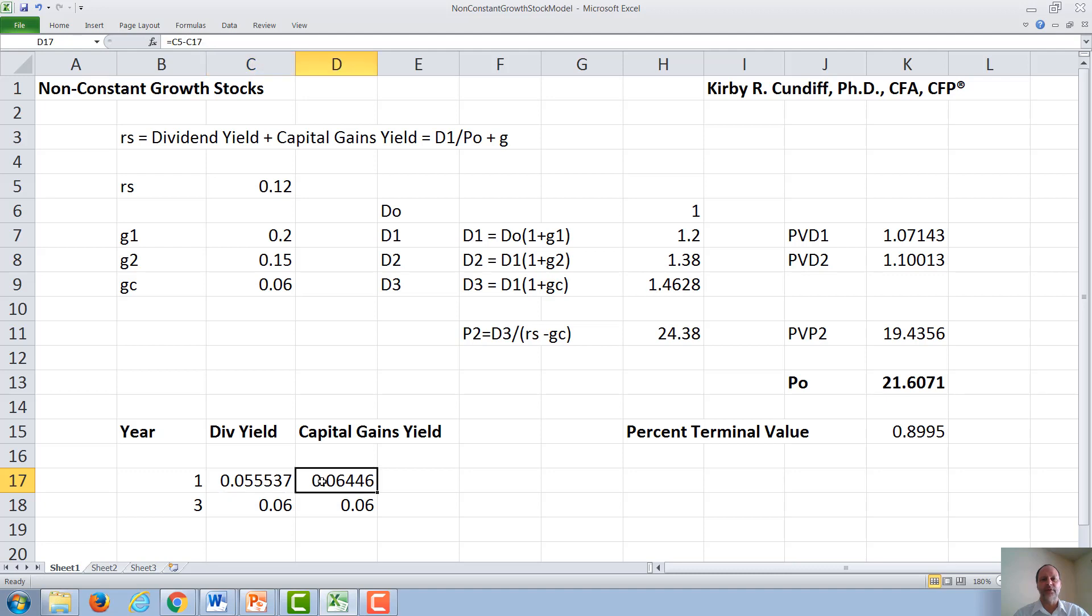Therefore, the capital gains yield has to equal Rs minus D1 over P0, or 0.065. In the final year, when it becomes a constant growth stock, this equation becomes true, and the growth rate becomes the capital gains yield. Therefore, the capital gains yield after it is constant growth becomes 6%.